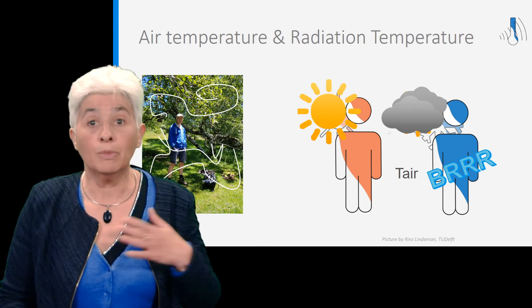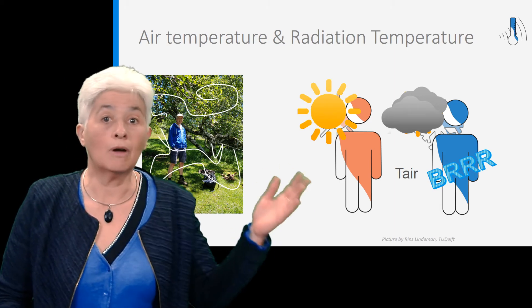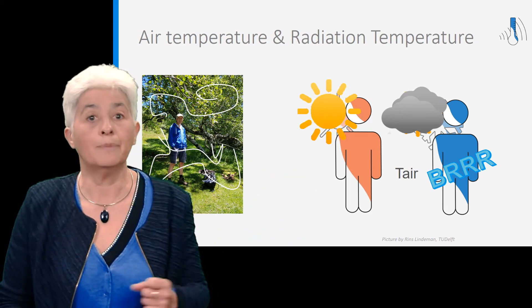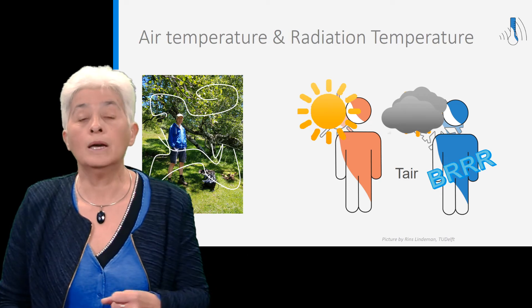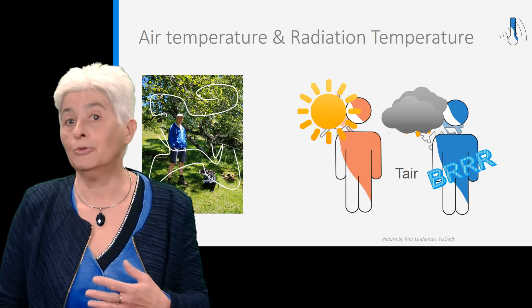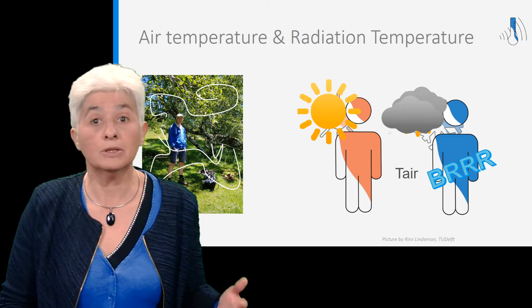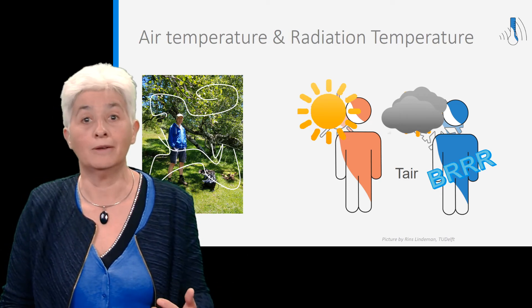Solar radiation is absorbed by the human body and the ground, trees, buildings, etc. It is why it is possible to feel warm in cold but sunny weather.